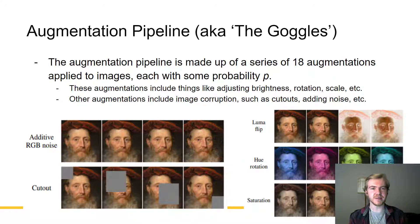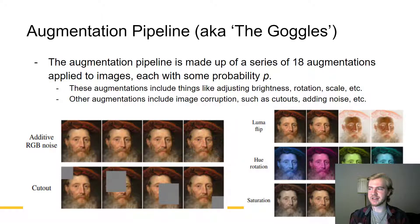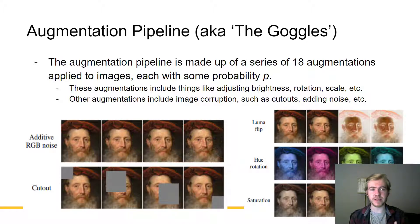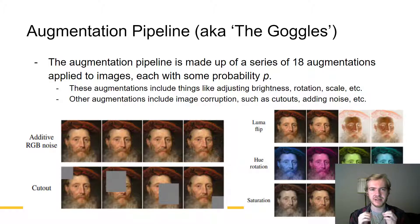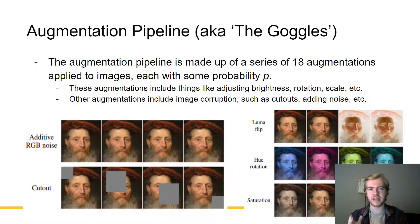Now we can talk about the augmentation pipeline. It is made up of a series of 18 augmentations applied to the images, each with some probability P. These augmentations include adjusting brightness, rotation, scale, and so on. Other augmentations include image corruption, such as cutouts and adding noise. As long as these aren't always applied in the same way, they are invertible, and the generator will not copy these augmentations — even corrupting the image to major degrees will not cause the generator to leak into these augmentations.